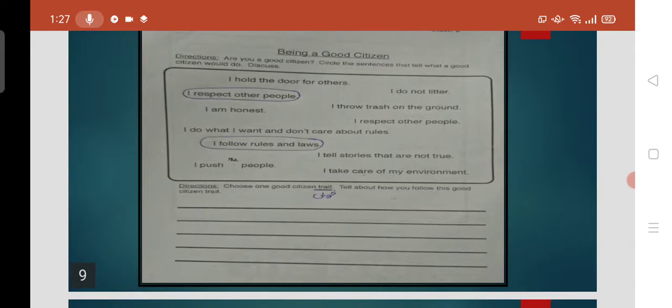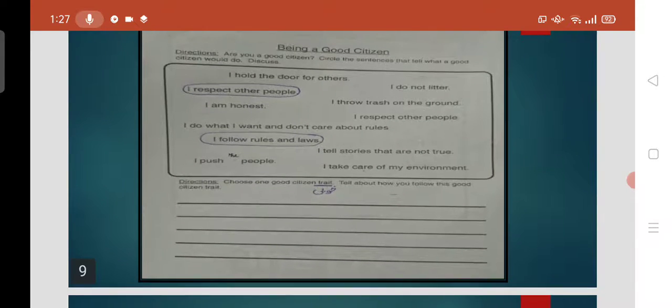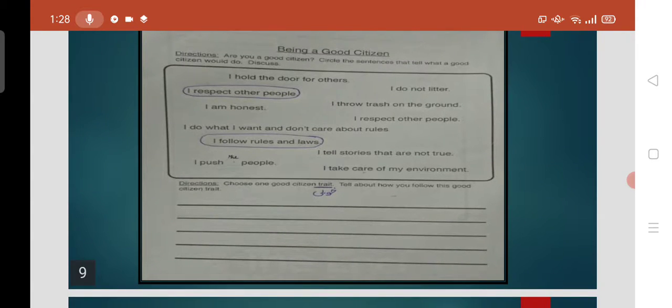After doing a circle, what do you have to do? Direction: choose one good trait, good citizen trait. What is a trait? Tell about how you follow this good citizen trait. You will have to tell how you follow this good citizen trait. I respect other people. I have shown good behavior to my friends. Now I will explain how I do respect them.